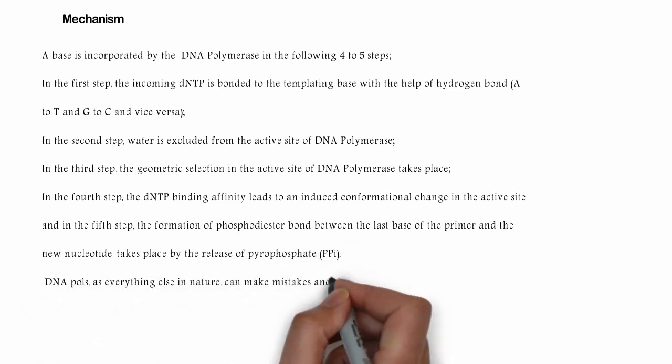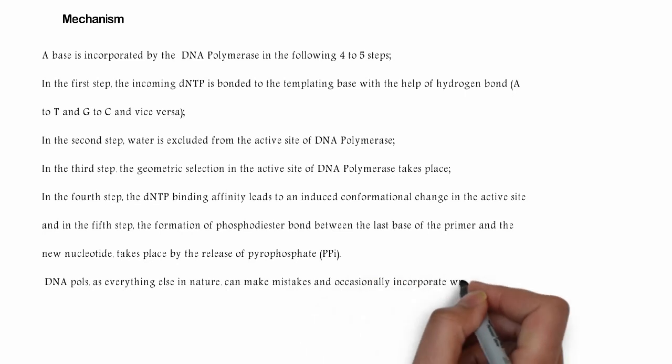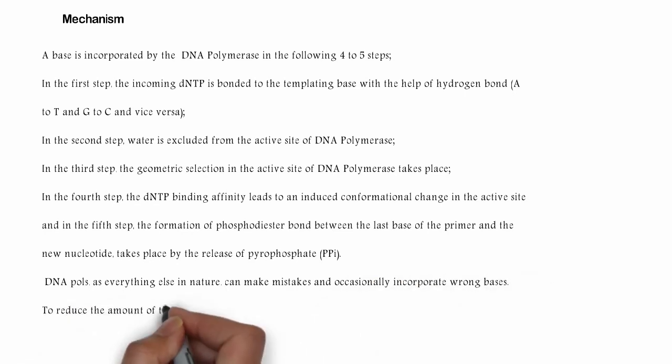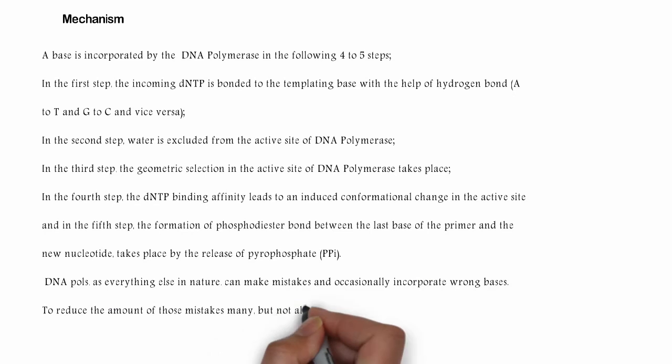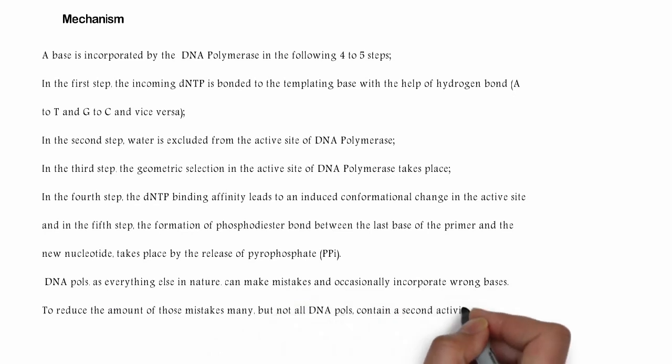And in the fifth step, the formation of phosphodiester bond between the last base of the primer and the new nucleotide takes place by the release of pyrophosphate. DNA polymerases, as everything else in nature, can make mistakes and occasionally incorporate wrong bases. To reduce the amount of those mistakes, many but not all DNA polymerases contain a second activity: the three-prime to five-prime exonuclease activity.